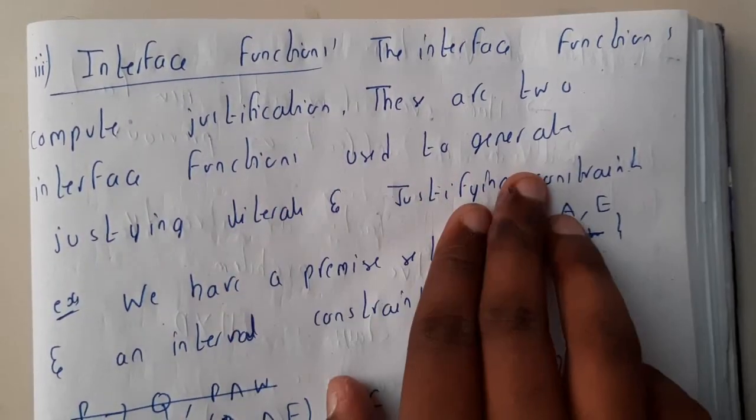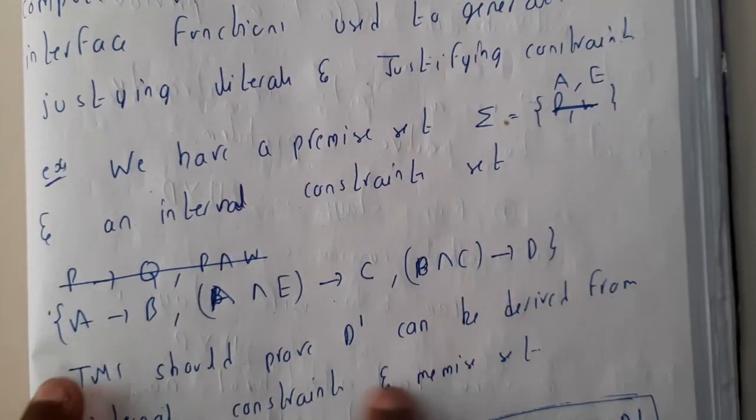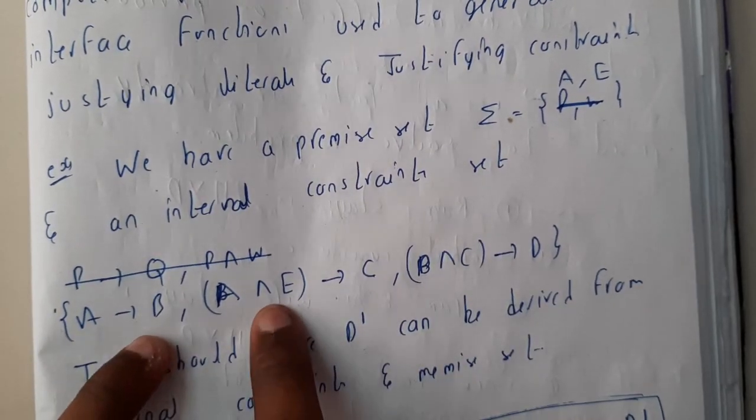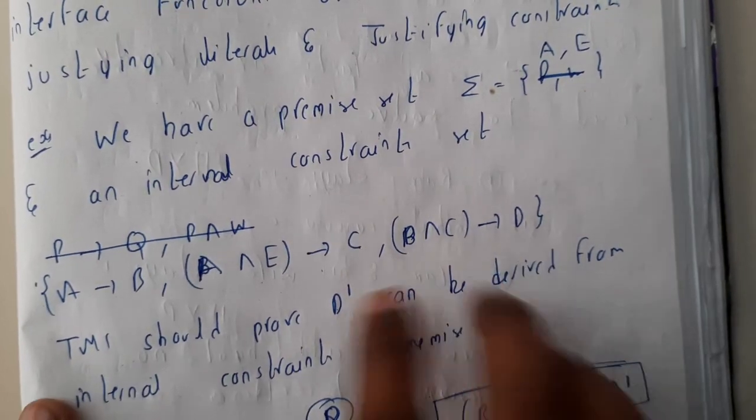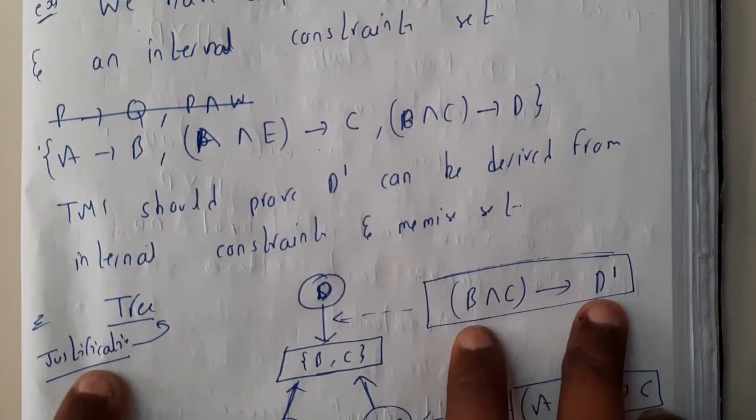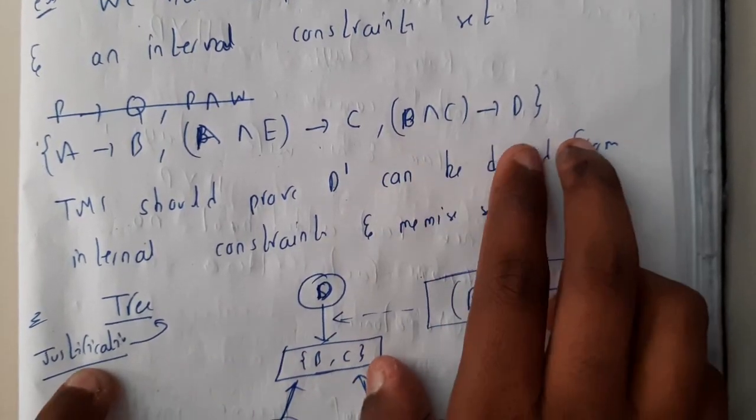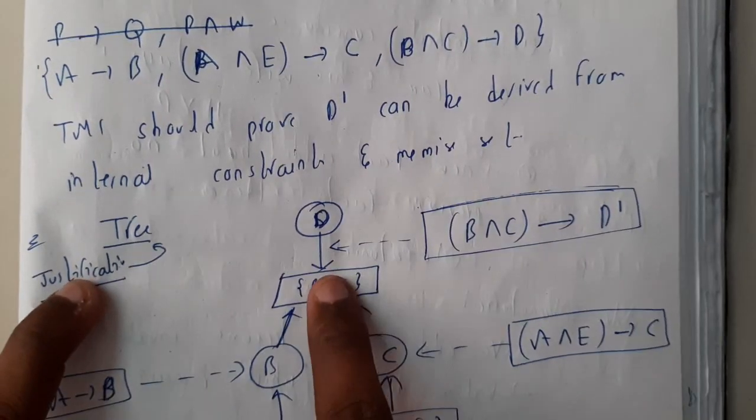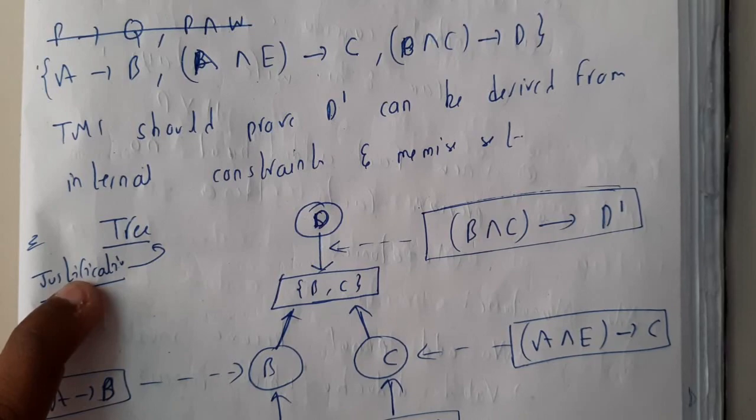If you take a small example, let us assume we are having these things: a tends to b, a and e tends to c, b and c tends to d. So these are the three things and you want to find the contradiction or d dash. So b and c tends to d dash. So you'll be writing the same literals inside, so we have written here b, c.